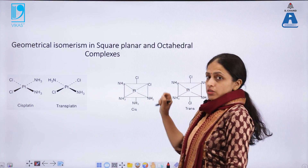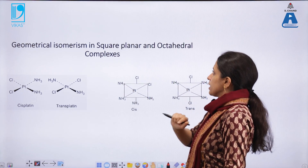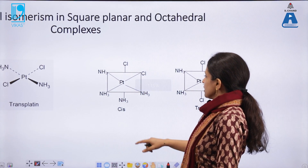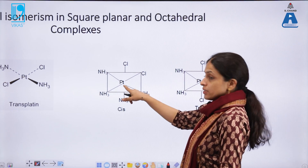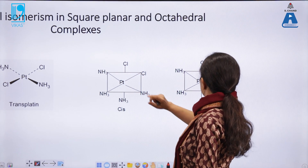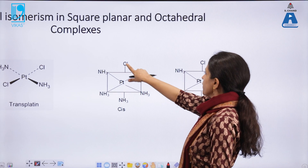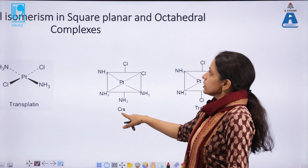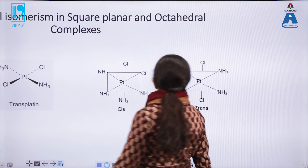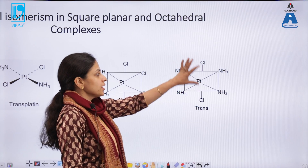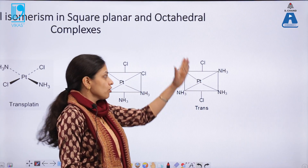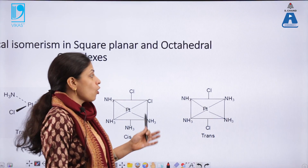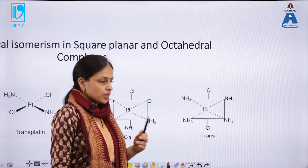Geometrical isomerism can also be exhibited in octahedral complexes. Here you can see that platinum is the central metal atom and the Cl groups are adjacent to each other in the cis isomer. In the second isomer, the two Cl groups are at axial positions — opposite to each other — making it the trans isomer. This clearly shows how transition metal complexes can also exhibit geometrical isomerism.